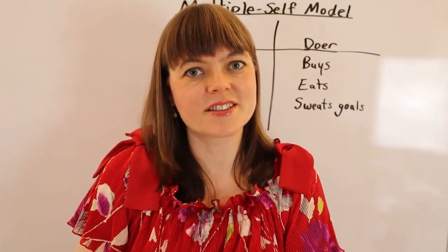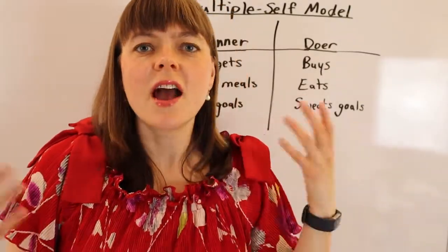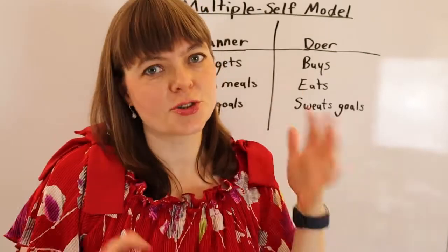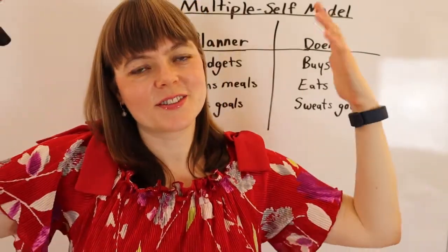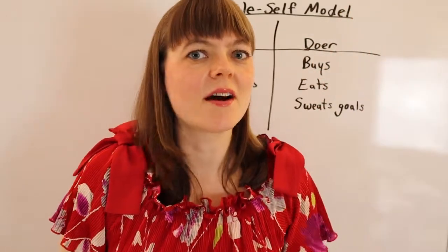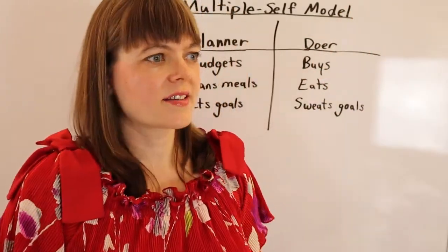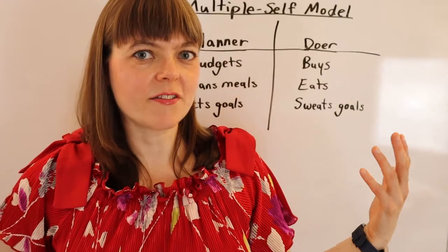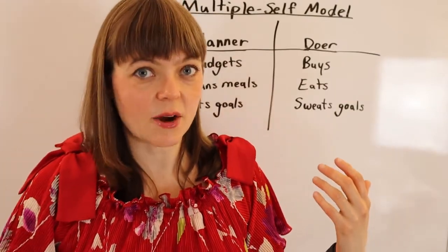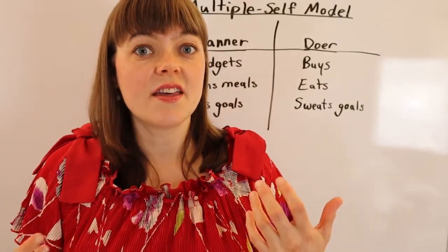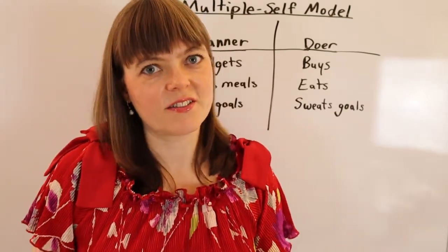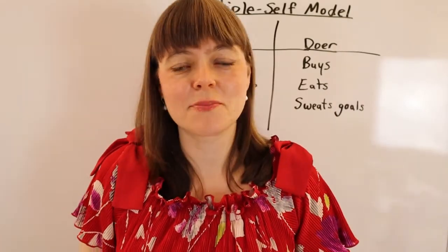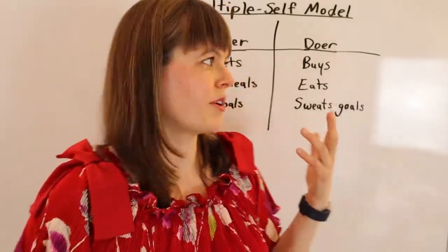The second model I want to talk about is the planner-doer model. Oftentimes this is referred to as a dual self model rather than a multiple self model, but of course dual self is under the umbrella of multiple self. The planner-doer model separates the self into the self that plans out and has ideals you want yourself to live up to, and the doer self is the self that actually acts them out. There can be tension between these two, and it's worth pointing out.